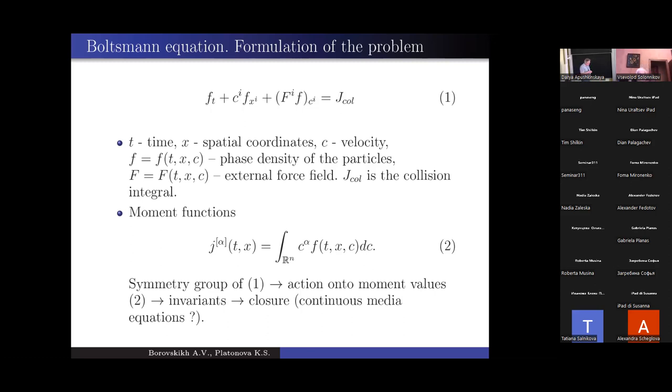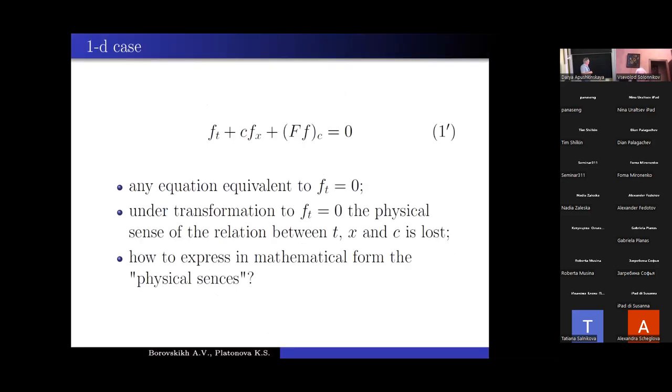So we start with the simplest case. It's the case of one dimensional equation. At the right hand side, you see zero because in one dimensional case, particles simply exchange the impulses or velocities. They all are equal to each other. And so the collision does not change the distribution.